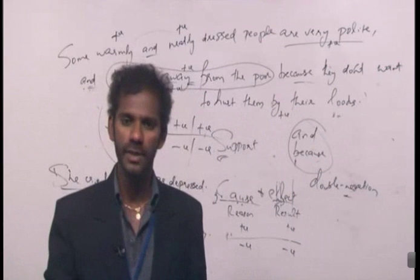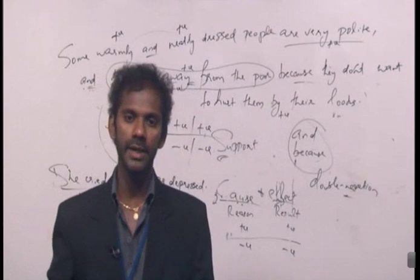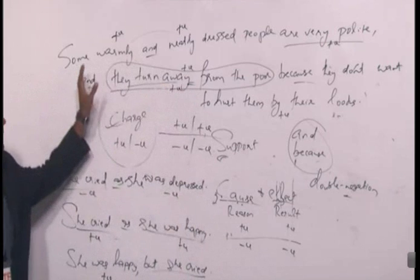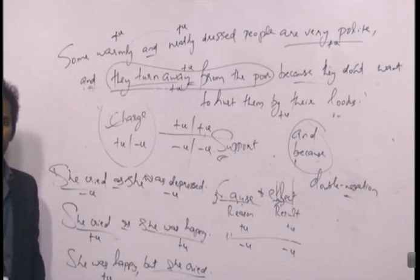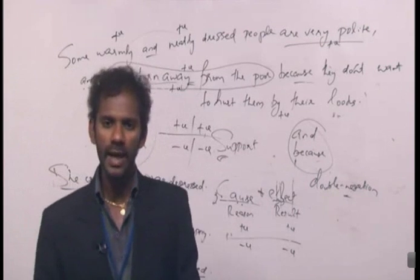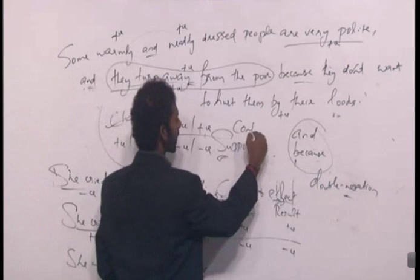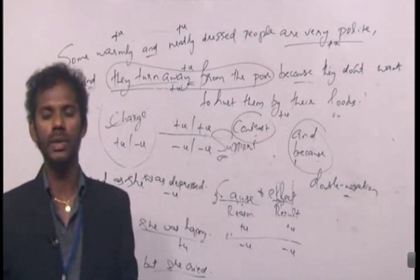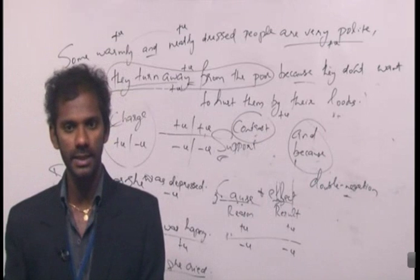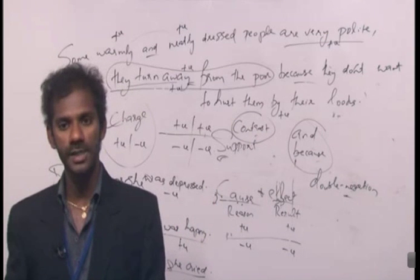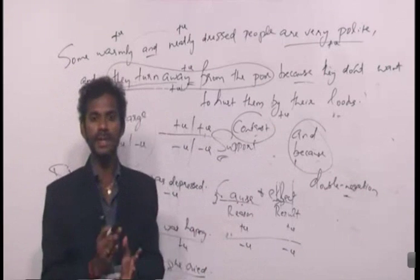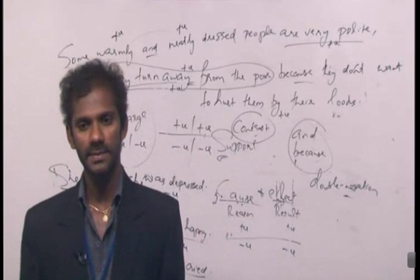This concept is more than enough to identify the charge of every idea in a sentence. Identifying the charge will surely help us eliminate options. One more reason this idea is positive: the sentence started positively — 'Some warmly and neatly dressed people' — and there is no contrast indicator anywhere in the sentence. Only a contrast indicator signals a change in charge. Since there is none, the whole sentence is positively charged from beginning to end.